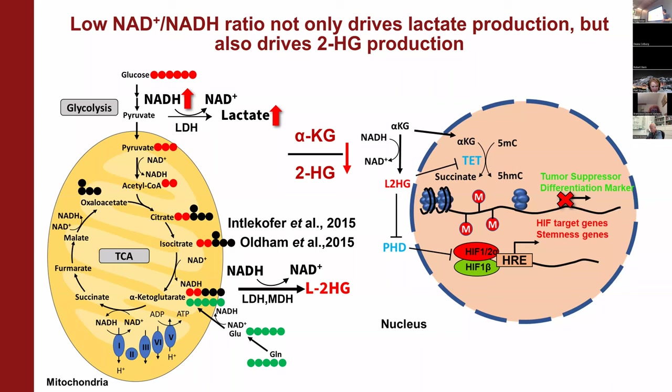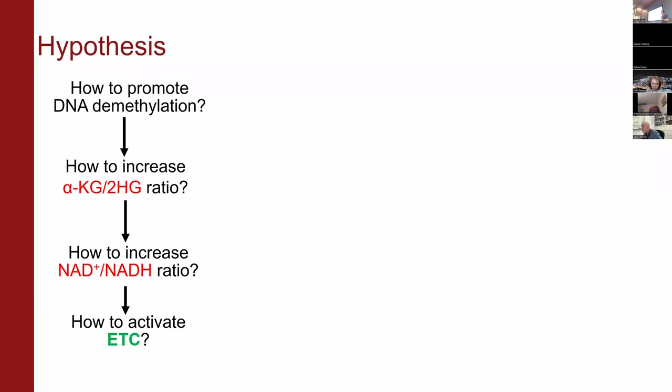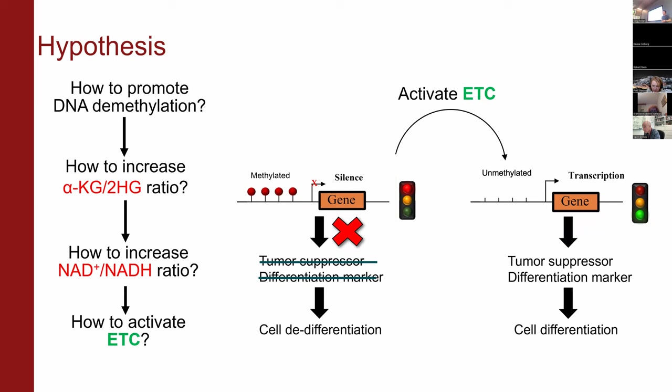Based on this theory, we formed our hypothesis: to reactivate tumor differentiation requires promoting DNA demethylation, which is dependent on the intracellular αKG-to-2HG ratio. As discussed, the αKG-to-2HG ratio is controlled by the NAD-to-NADH ratio, which is coupled to ETC activity. Therefore, to activate tumor differentiation, we need to activate the ETC. So the next question is: how can we activate the ETC? Through drug screening, we identified that mitochondrial uncouplers could be one possible answer.